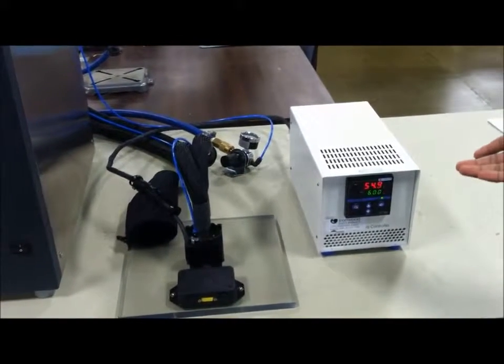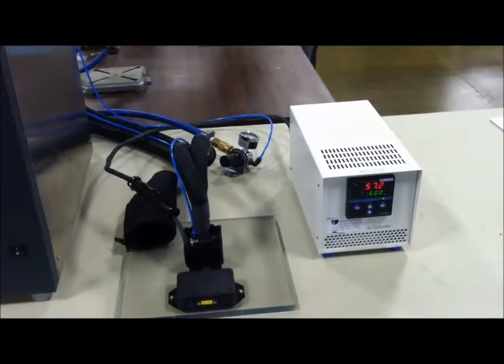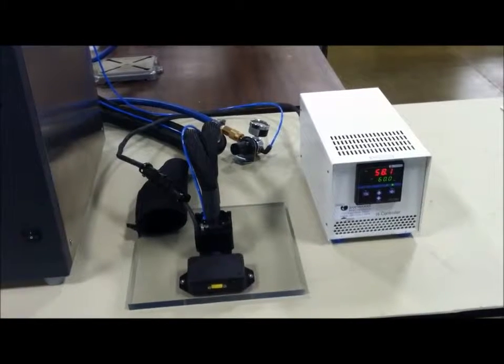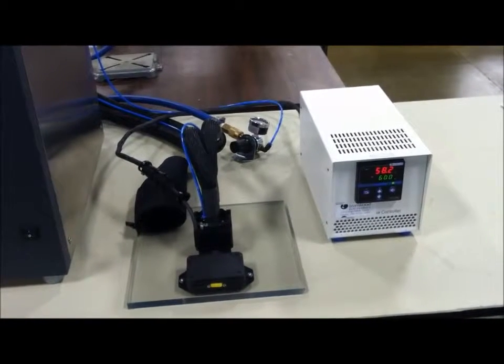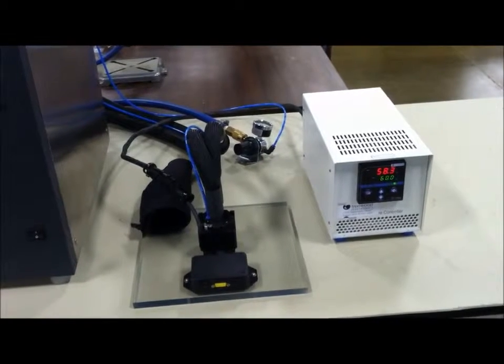That Peltier module has a current supply from the controller and it basically heats it up to 60 degrees C. You can see how fast it ramps it up. It goes up to 2 to 3 degrees C per second. Right now, it is trying to stabilize at 60 degrees C.